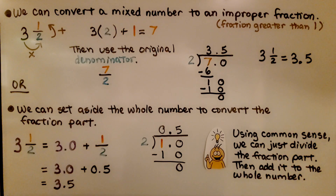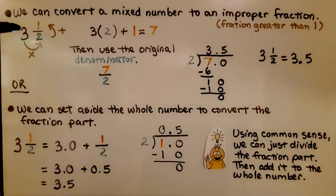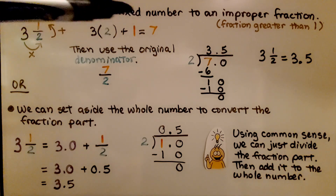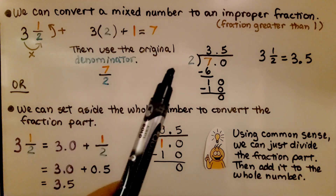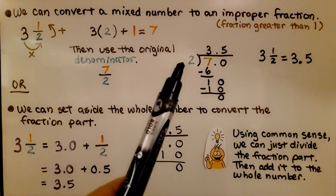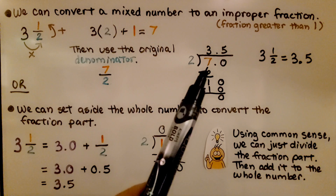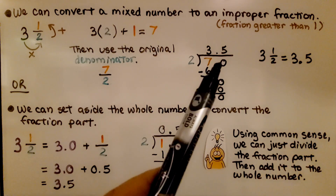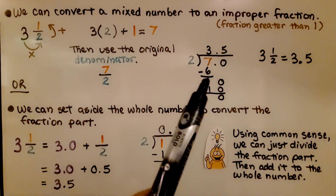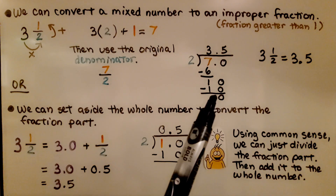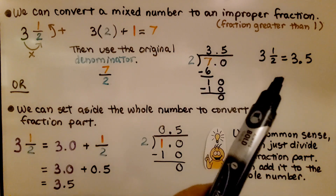We can convert a mixed number to an improper fraction. Improper fractions are fractions greater than 1. If we have 3 and 1 half, we multiply the whole number by the denominator: 3 times 2 is 6, then add the numerator to get 7, written over the original denominator — so we have 7 halves. Now we do 7 divided by 2. 2 fits into 7 three times; 2 times 3 is 6. We subtract to get 1, add a decimal point and a 0. 2 fits into 10 five times; 2 times 5 is 10. We get a 0 remainder, so 3 and 1 half is equivalent to 3 and 5 tenths.